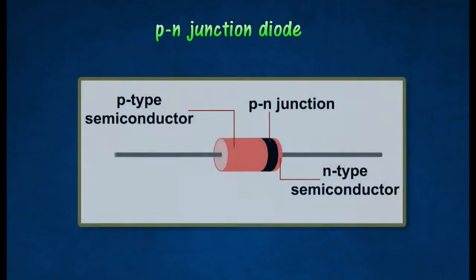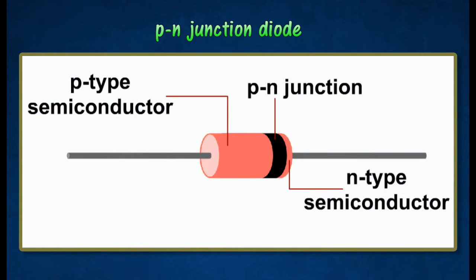A diode is formed by joining a P-type semiconductor to an N-type semiconductor. It is also known as a PN junction diode. The two electrodes are the anode, made from the P-type semiconductor, and the cathode, made from the N-type semiconductor.